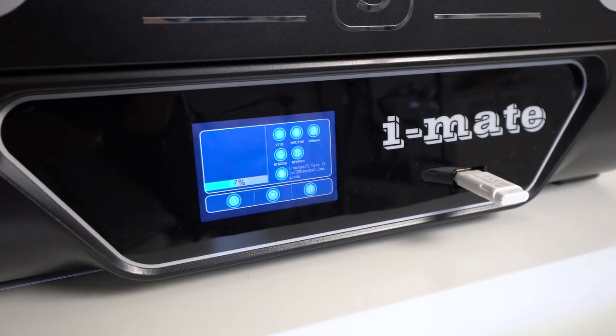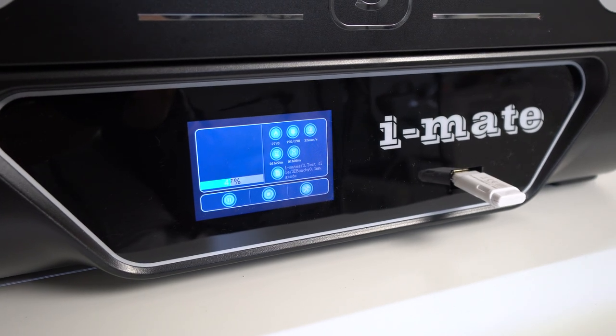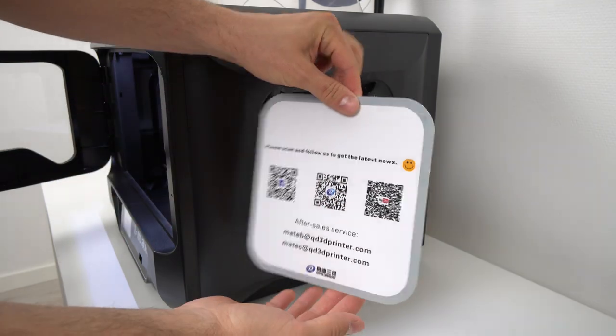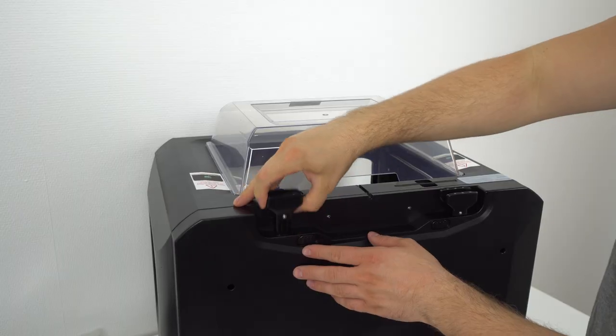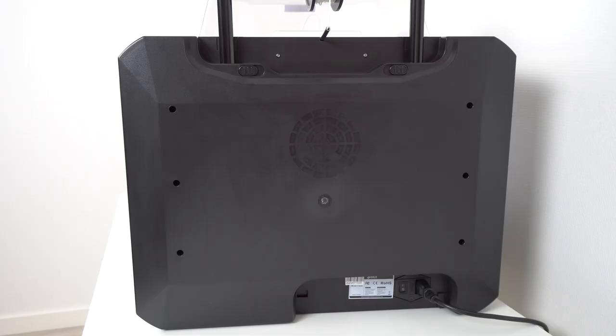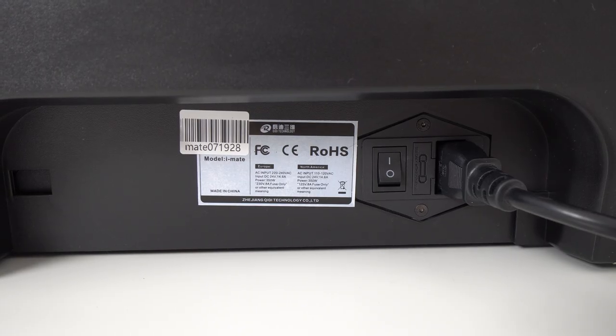Under the front door there is a USB port and a LCD screen. And on the left and right we have the side magnetic panels that you can easily remove when you want to. On the back of the printer there is a spool holder that retracts, AC socket with a fuse and the main on-off power switch.